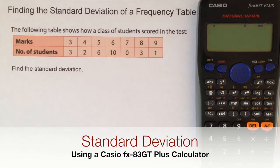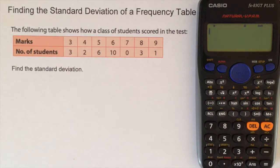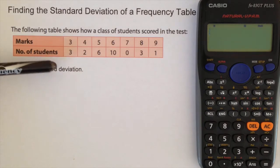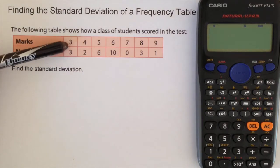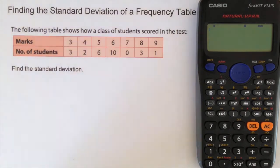In this question, we have a table that shows us how a class of students scored in a test. We see there are two rows. On the top row, it gives us the marks, and on the lower row, the number of students that got that mark. So we see, for instance, that three students scored three marks in the test and two students scored four marks.